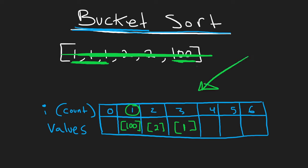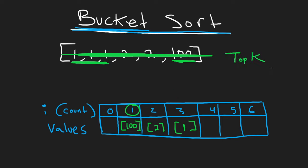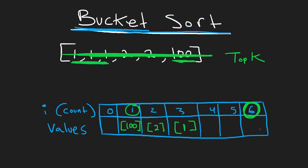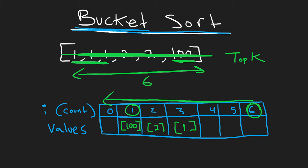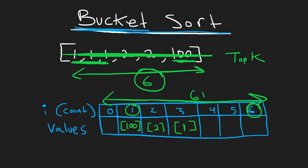Once we've counted every value and placed it in the appropriate position in this array, we want the top k most frequent values. We iterate from the right end of the array. The key insight is that the maximum possible index is bounded by the size of the input array — if every element is the same, a value can occur at most n times, so the array only needs to be of size n+1, proportionate to the input.